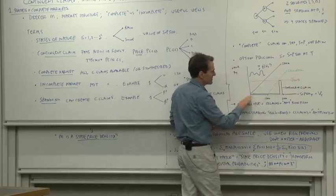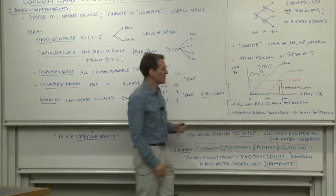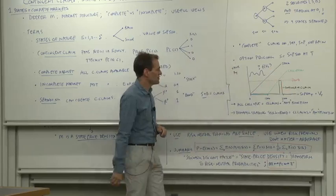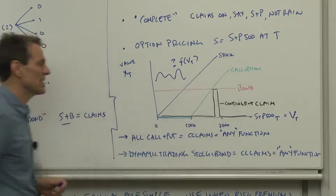So a stock, for example, the S&P 500 itself is just the 45-degree line. As the value goes up, the value of that payoff goes up. A bond pays off the same amount no matter what happens to the S&P 500. A call option pays off nothing until the strike price and then pays off linearly.